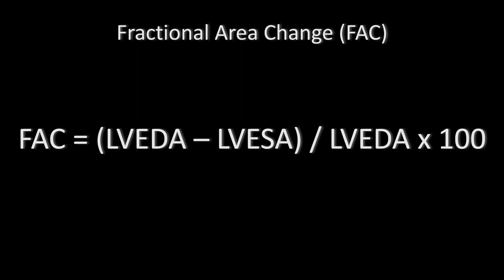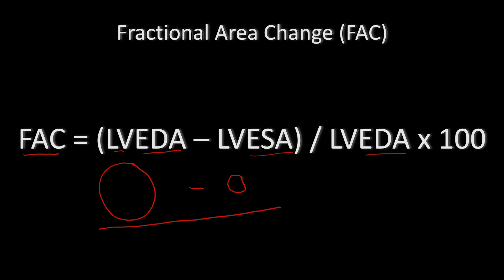This is the equation I was referring to earlier. It may seem overwhelming at first but it's actually fairly simple. The fractional area change equals the left ventricular end-diastolic area — the trace of the left ventricle at the mid-papillary level at end diastole — minus the left ventricular end-systolic area, divided by the left ventricular end-diastolic area, times one hundred. The result is expressed as a percentage.